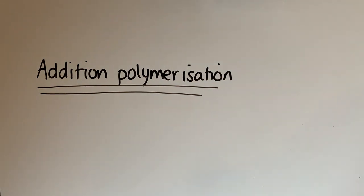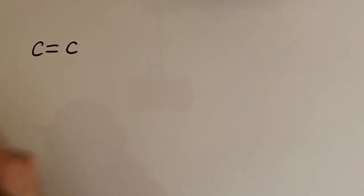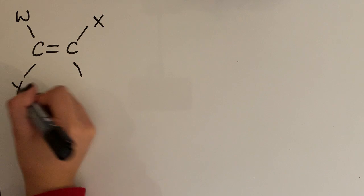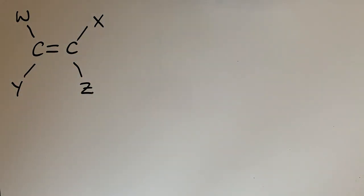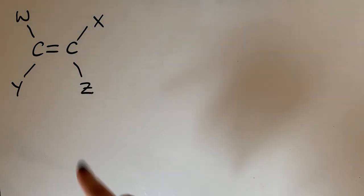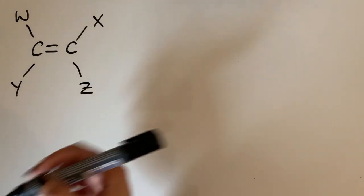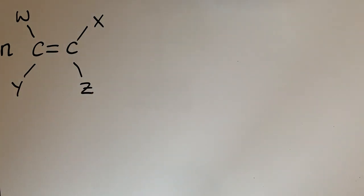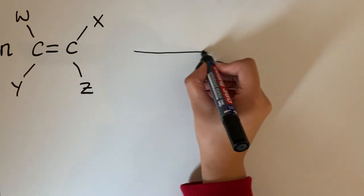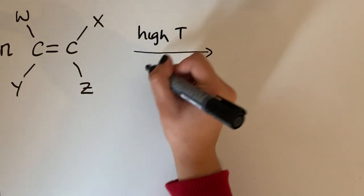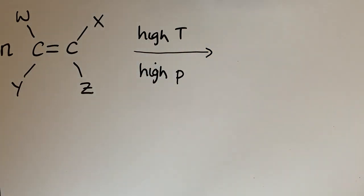Let's have a look at the general reaction of addition polymerization. A key thing is that we end up with one product — that's what makes it an addition reaction. We're going to use a generic alkene with a double bond, using generic groups W, X, Y, and Z which can be absolutely anything. We have N lots of this monomer, and for polymerization to occur we need high temperature and high pressure, though the specific conditions depend on the monomer being used.